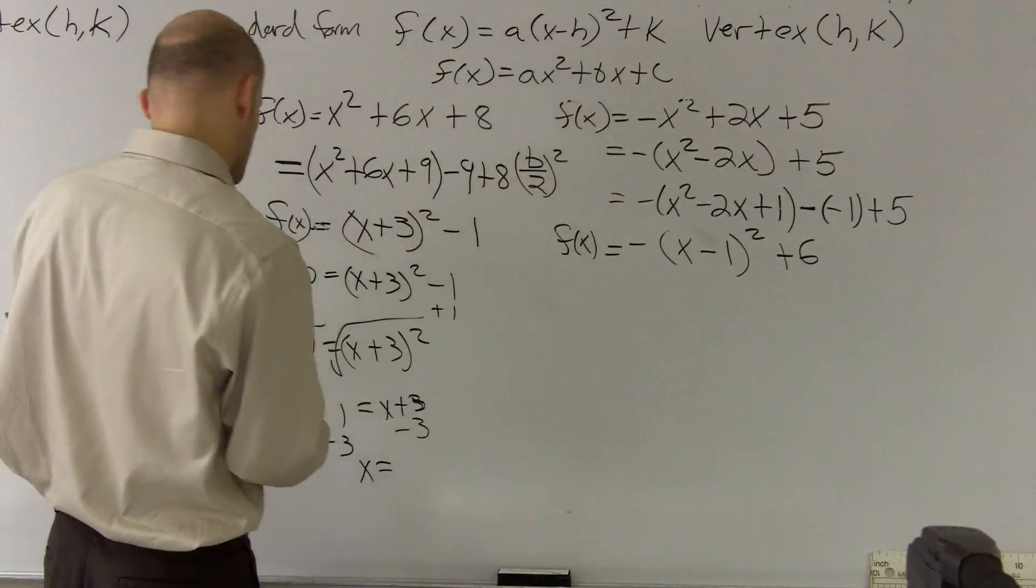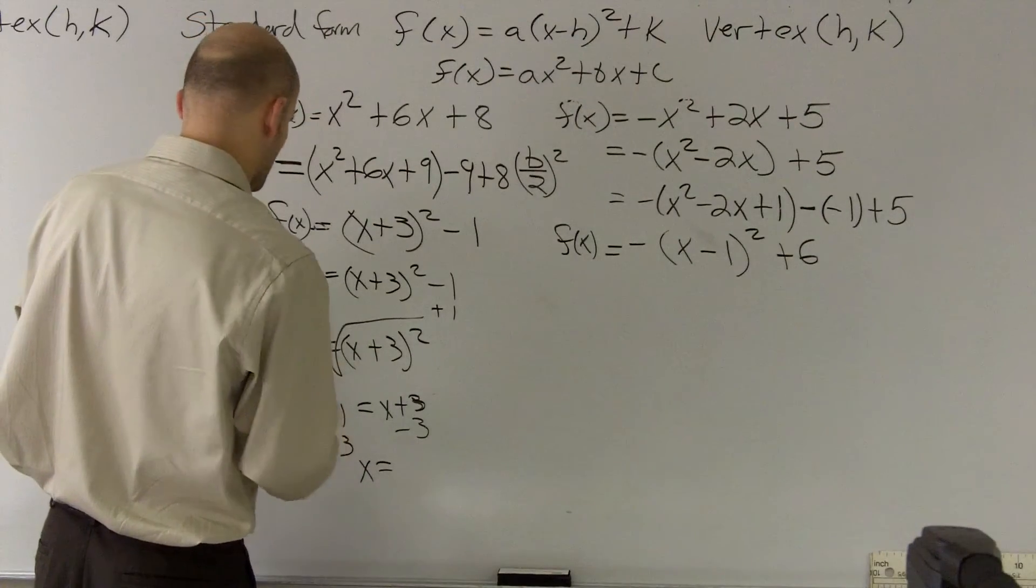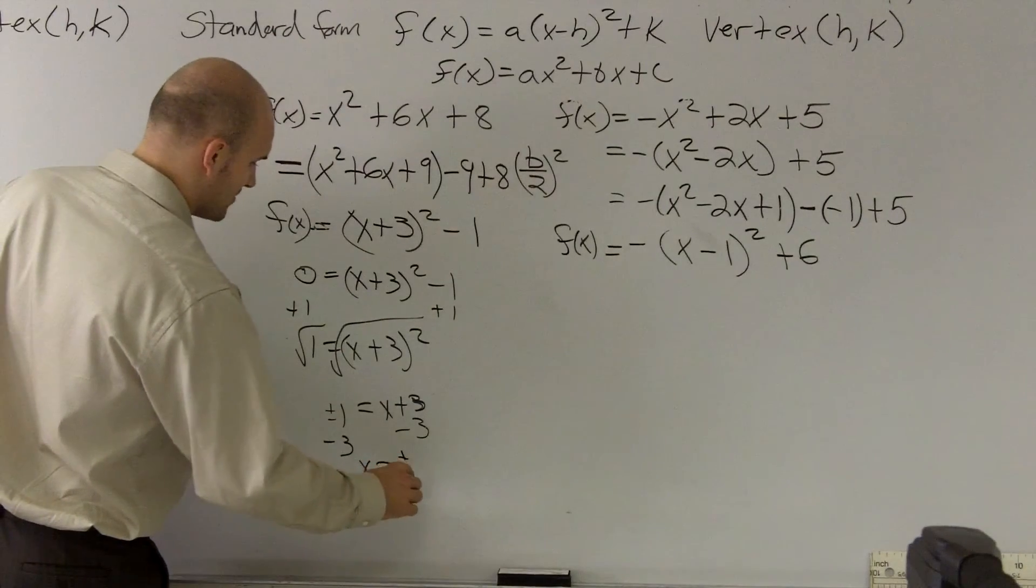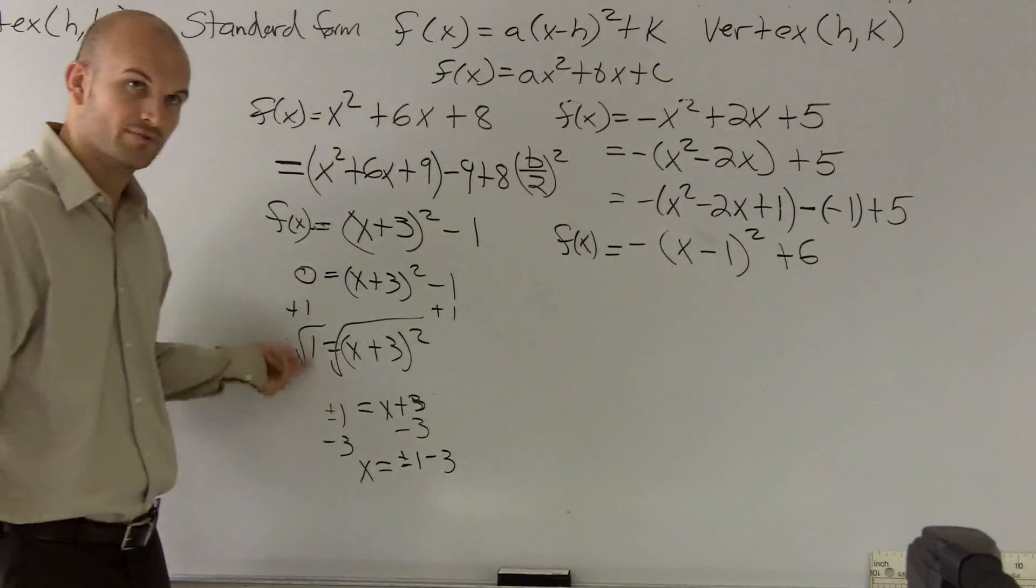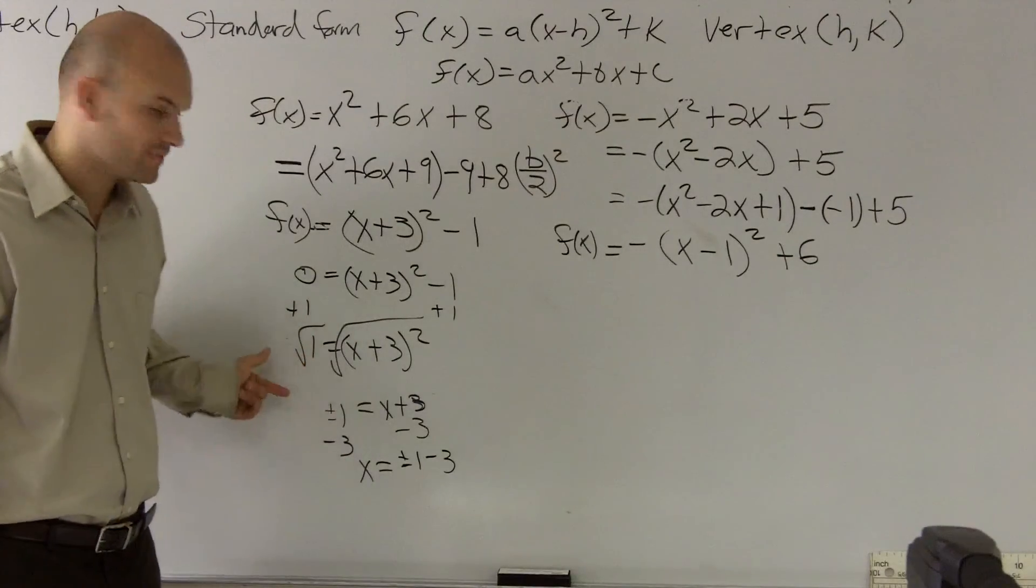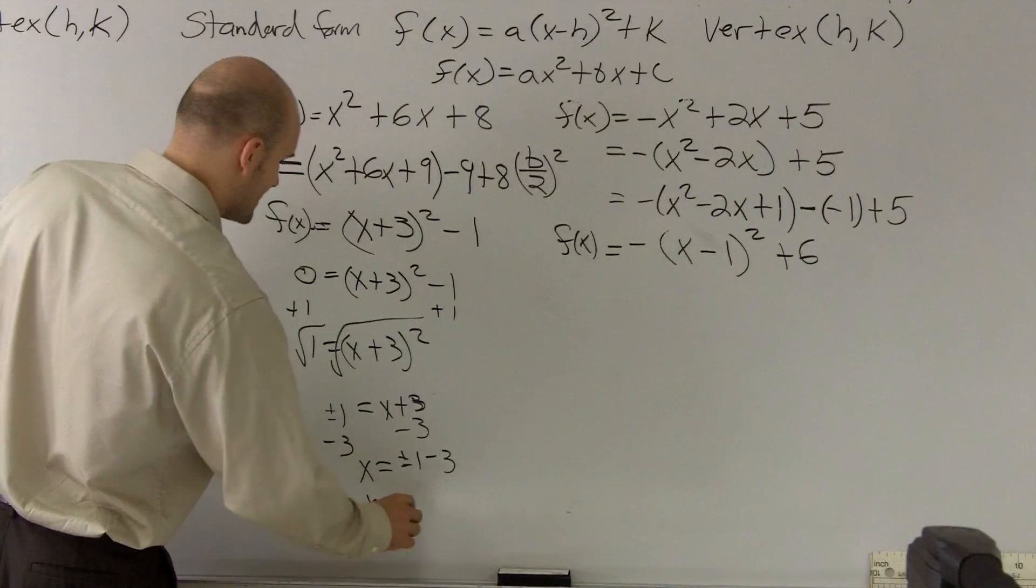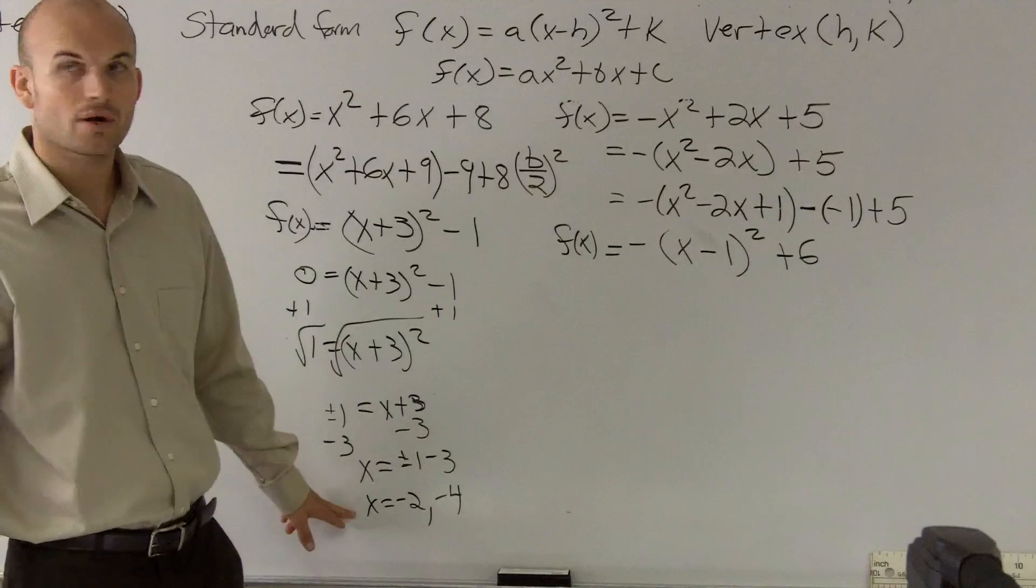x equals, I'm sorry, that's plus or minus. And then therefore you have x equals plus or minus 1 minus 3. Because if you're taking the square root, it's going to be plus or minus, right? So you have x equals plus or minus 1 plus 3. So you can do x equals negative 2 or negative 4.